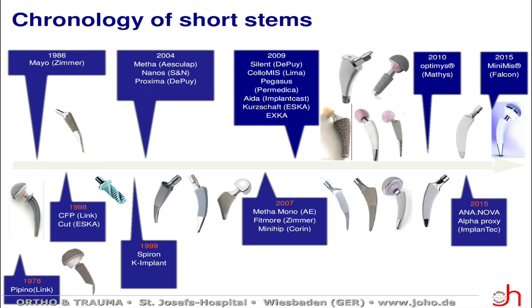If we look at this in a chronological way, we can see there were already some short stems on the market. On the left side, you can see the Myotype, which was already introduced by Michael Morlock, the CFP prosthesis. And if we go more to the right side, you can see some newer generation of short stems, and we are confronted with terms like calca fixation and anatomical restoration.